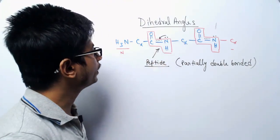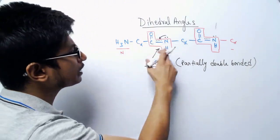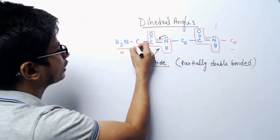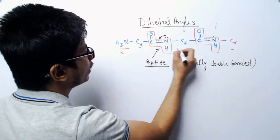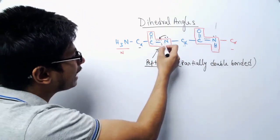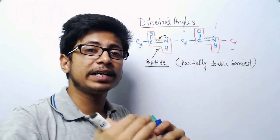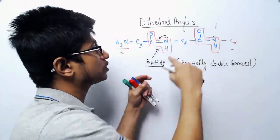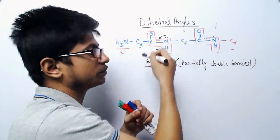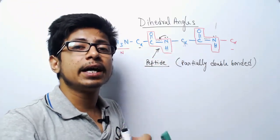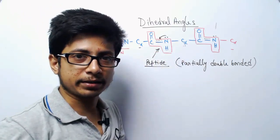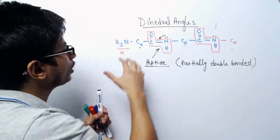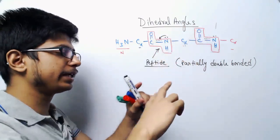The peptide bond acts like a partially double-bonded bond. As a result of this partial double bond nature of the peptide linkage, the amino acids on either side cannot rotate around this bond. It will be unable to rotate around this partial double bond character because it is kind of a double bond feature — it is restricted to rotate. So all those amino acids on this side and that side cannot rotate.